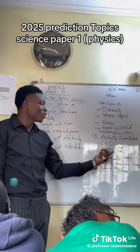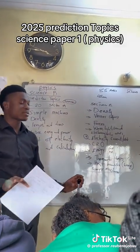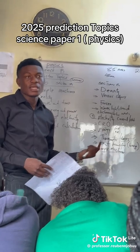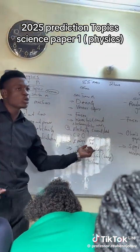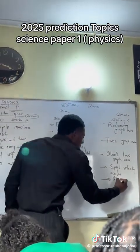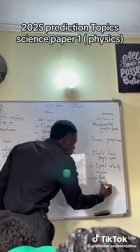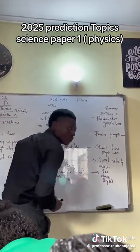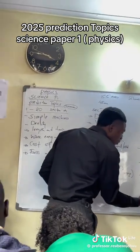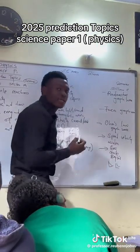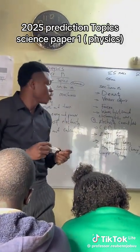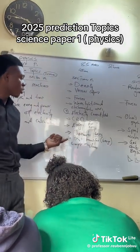Section B also covers energy — potential energy and kinetic energy — and thermometers, which are very important. On thermometers, there are also gases and gas law graphs. We have Charles's Law and Boyle's Law. On the graphs, remember how Boyle's Law is supposed to appear — it comes like this on the graph paper. We need to go through that so it becomes easy.